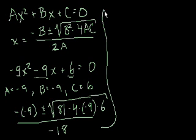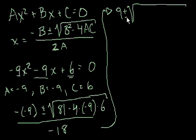Let's try to simplify this up here. Negative negative 9, that's positive 9, plus or minus the square root of 81. Let's see, this is negative 4 times negative 9. Negative 4 times negative 9 is positive 36. And then positive 36 times 6 is, 30 times 6 is 180,